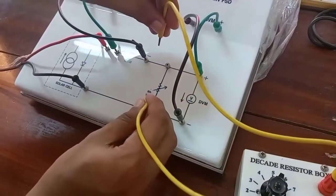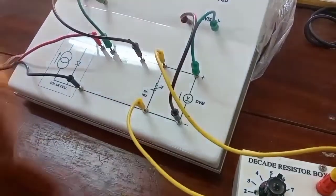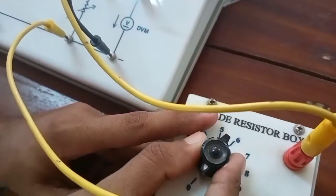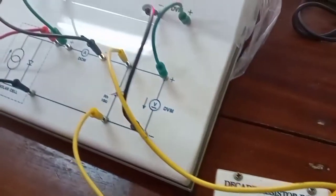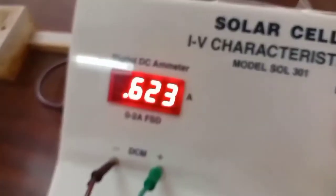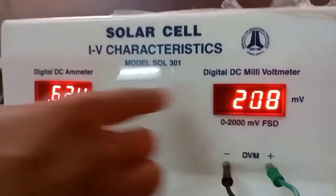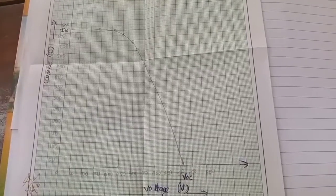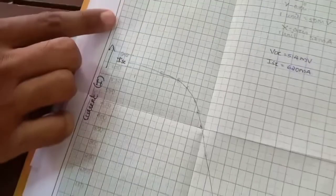The next procedure is to reconnect the rheostat and vary the resistance value by using this knob. And take corresponding ammeter and voltmeter readings. Using these values of voltage and current, plot a graph with V along the X axis and current along the Y axis.